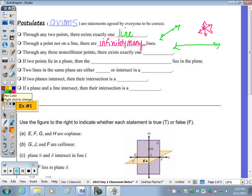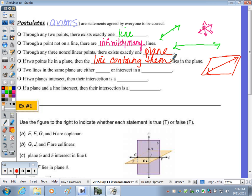Bullet number three, through any three non-collinear points, there exists one plane. If two points lie in a plane, so if I have a plane, here's my plane. If I have two points that lie in the plane, then the line containing those points is also going to be in the plane.